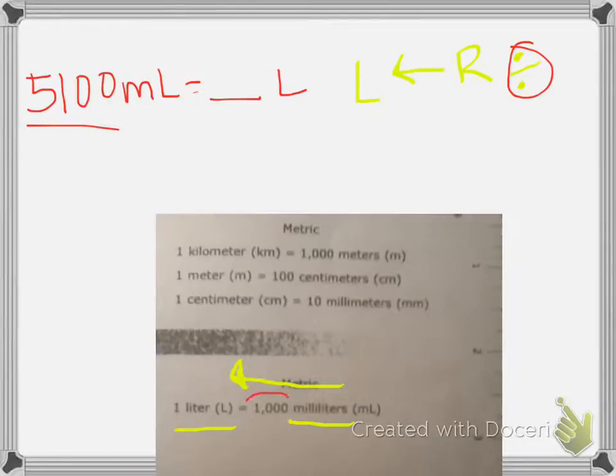So our important number here is 1,000. I need to divide this by 1,000.